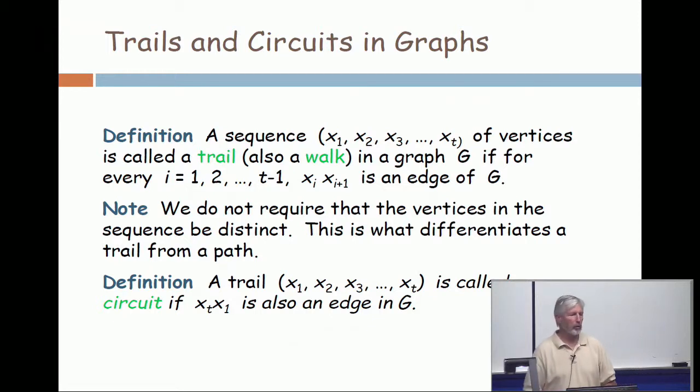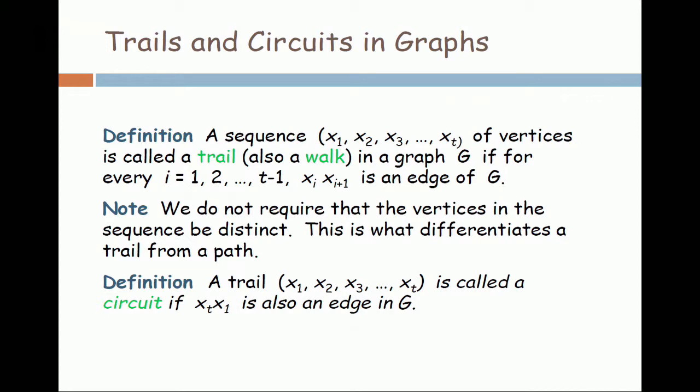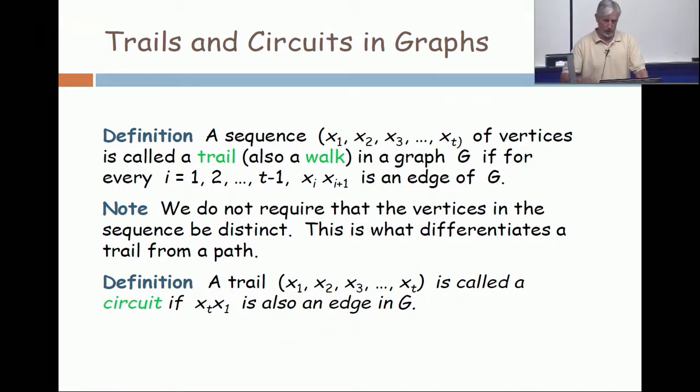But now we want to talk about trails and circuits. So a trail is just a sequence of vertices with any two consecutive ones adjacent. The real distinction between a trail and a path is that you can repeat vertices, you can even repeat edges. It's just wandering around in a graph, going from one vertex to a neighbor as long as you like.